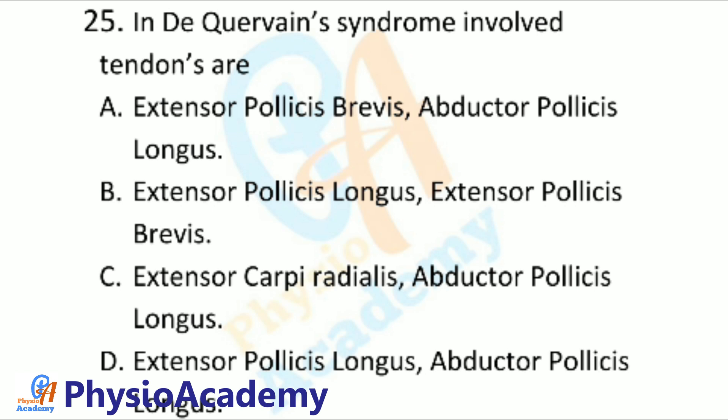Question number 25: In De Quervain's syndrome, the involved tendons are: Option A: Extensor pollicis brevis and abductor pollicis longus. Option B: Extensor pollicis longus and extensor pollicis brevis. Option C: Extensor carpi radialis and abductor pollicis longus. Option D: Extensor pollicis longus and abductor pollicis longus.